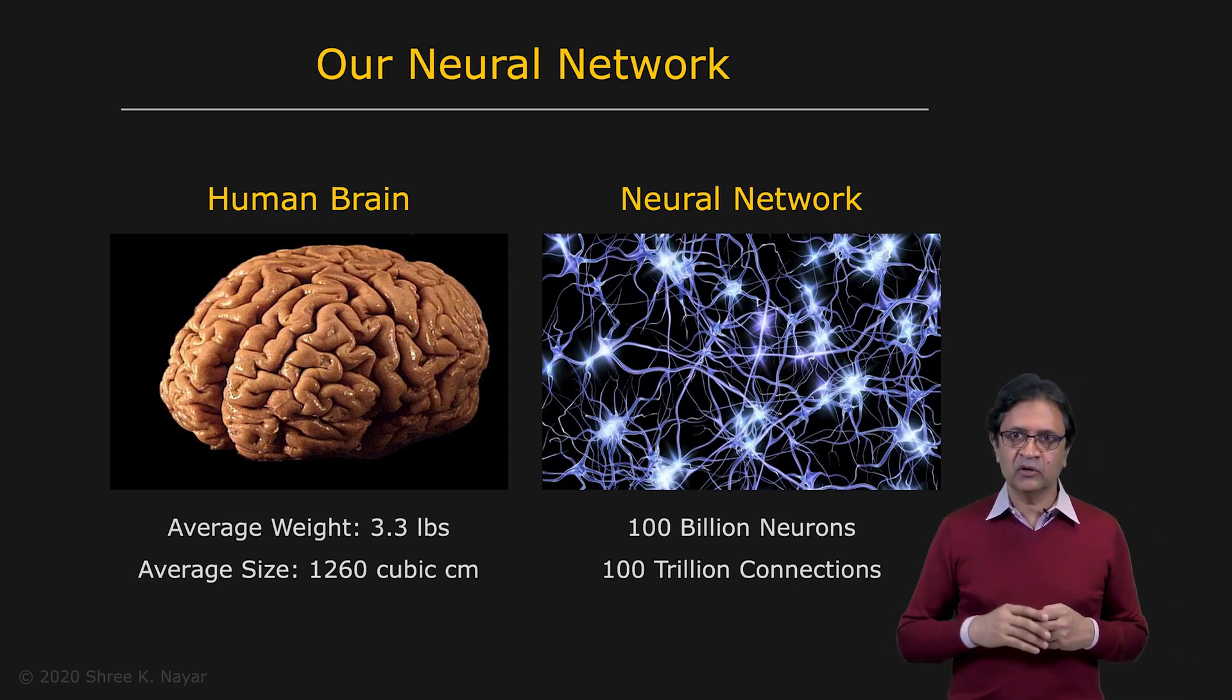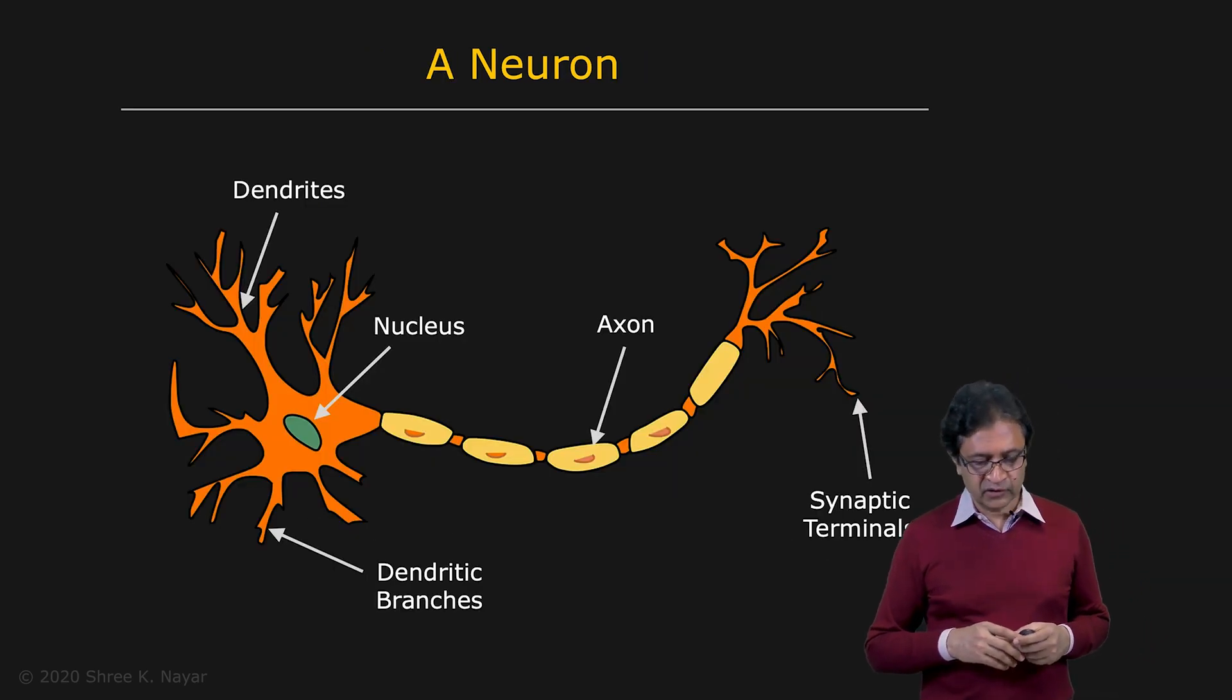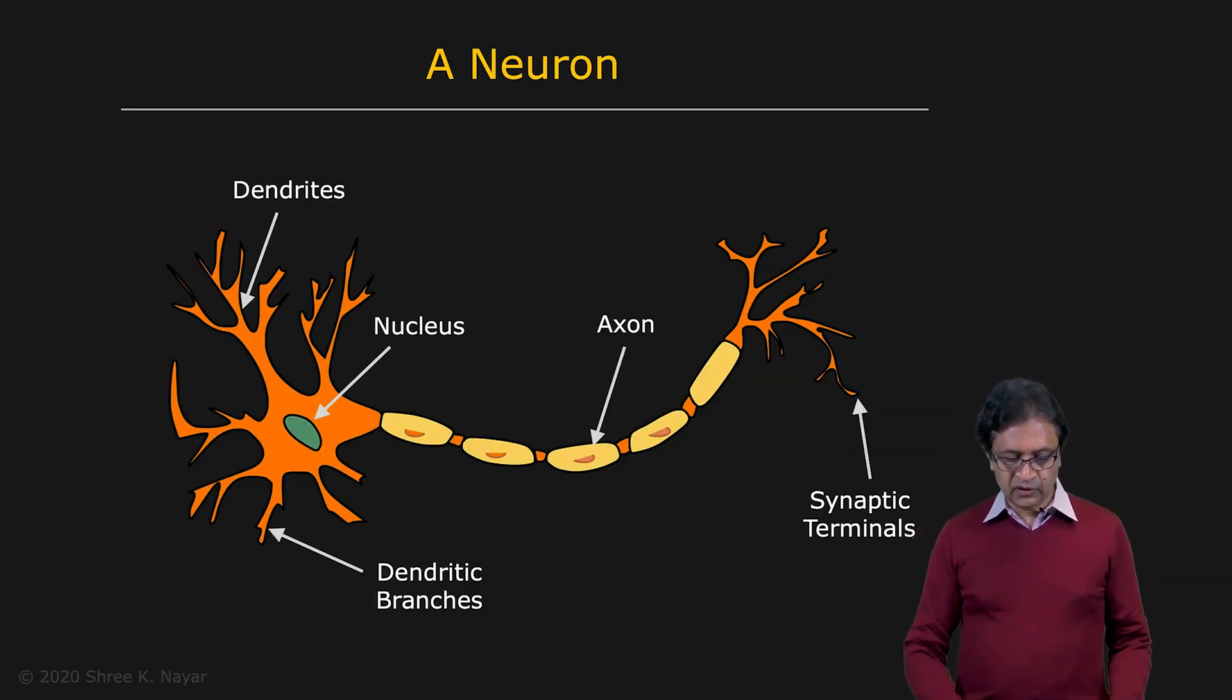But the basic building block of the human brain is the neuron. So let's take a look at the neuron. In the neuron you have a single cell. You have a nucleus and you have these dendrites. The dendrites actually receive signals from, for instance, other neurons. And then the signals come in. They're processed in some very simple way. That's what makes it very attractive. It's a very simple computation to produce an output.